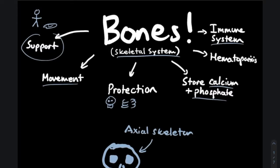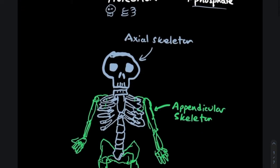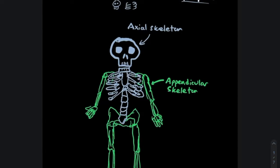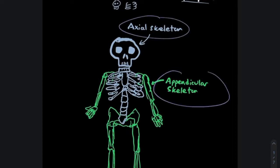The two main classifications you should know for the MCAT are the axial skeleton and the appendicular skeleton. The axial skeleton is composed of your skull, vertebrae, and ribs — basically all the stuff down the center of your body. The appendicular skeleton, as the name suggests, makes up your appendages or the parts of your skeleton that connect to the appendages, like your scapula, humerus, pelvis, and femur.